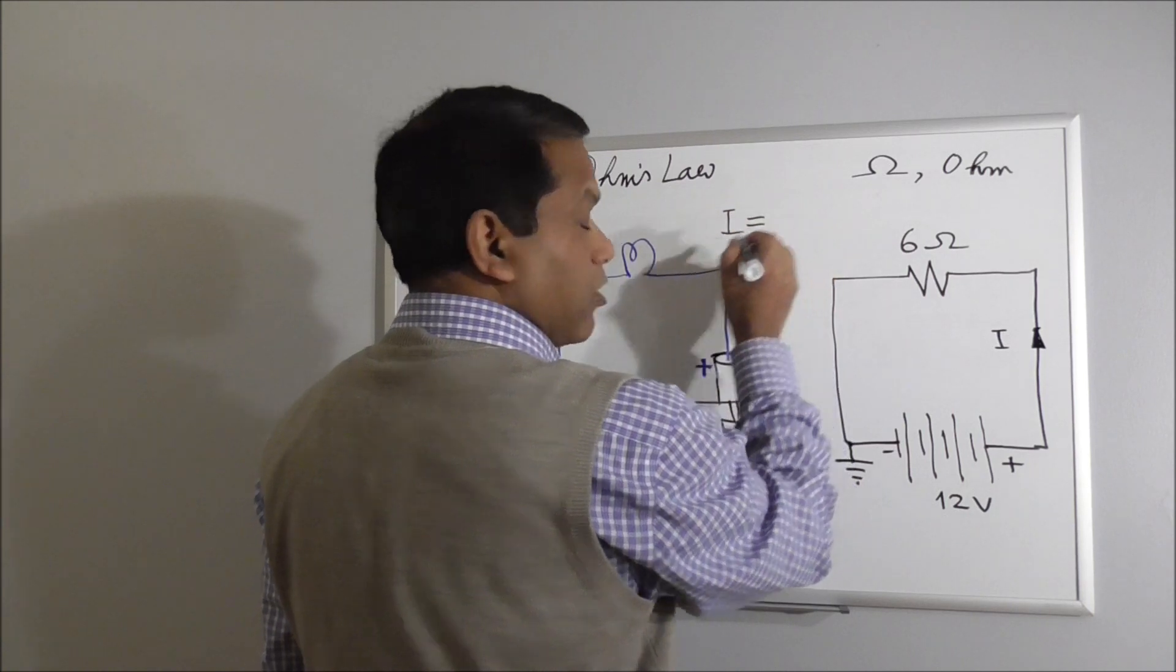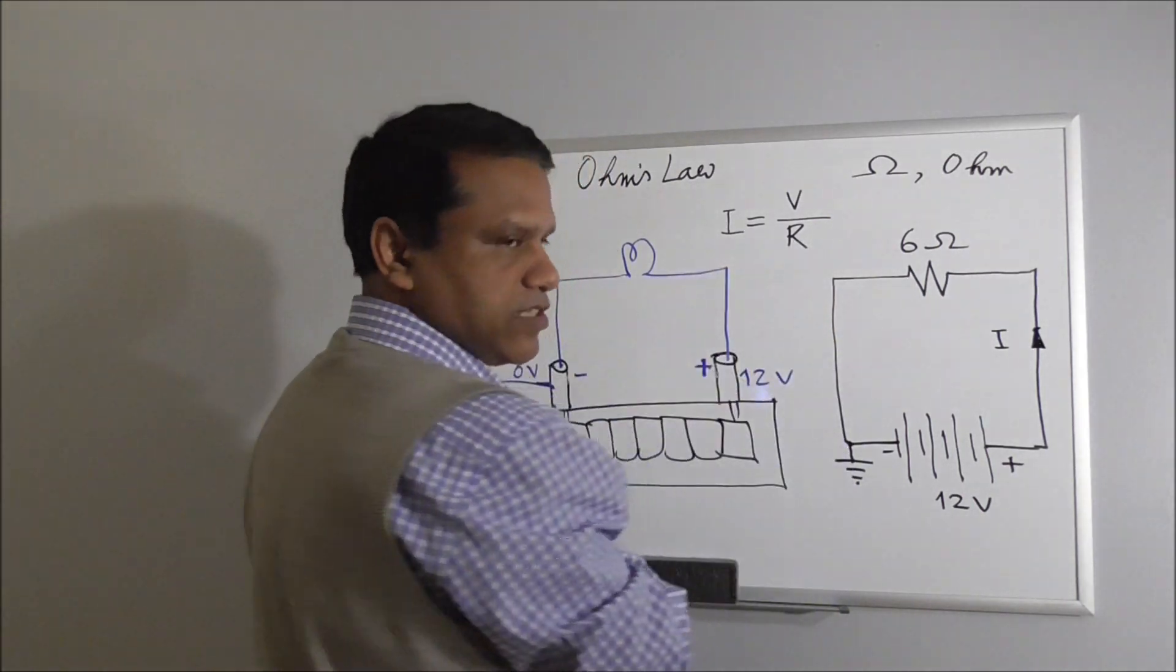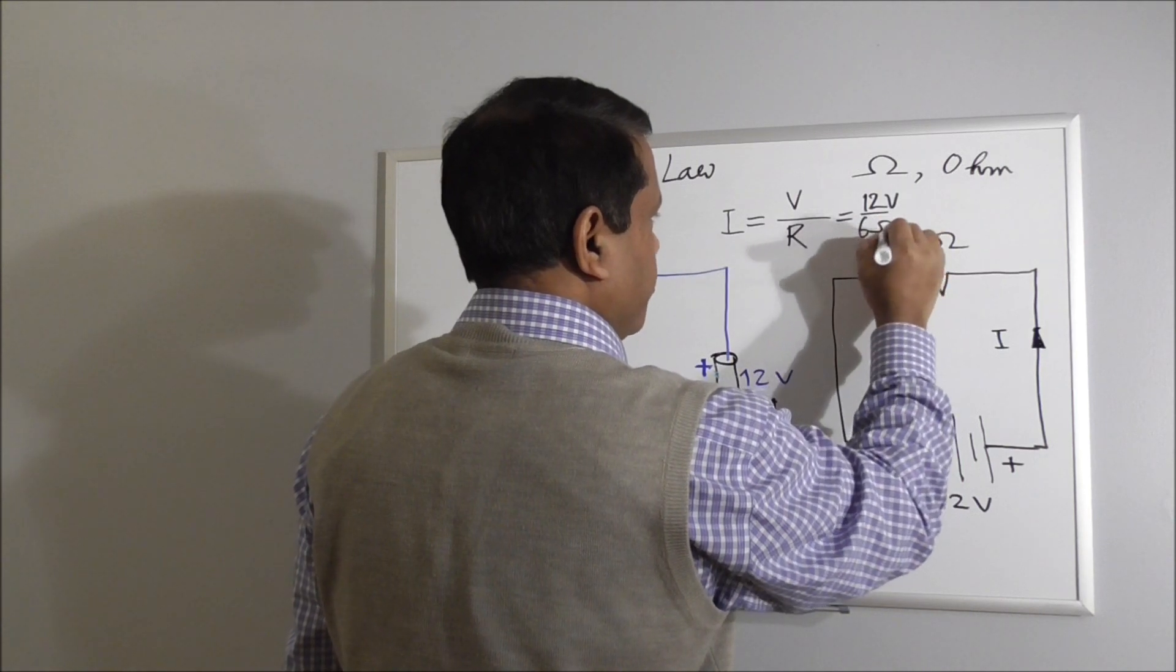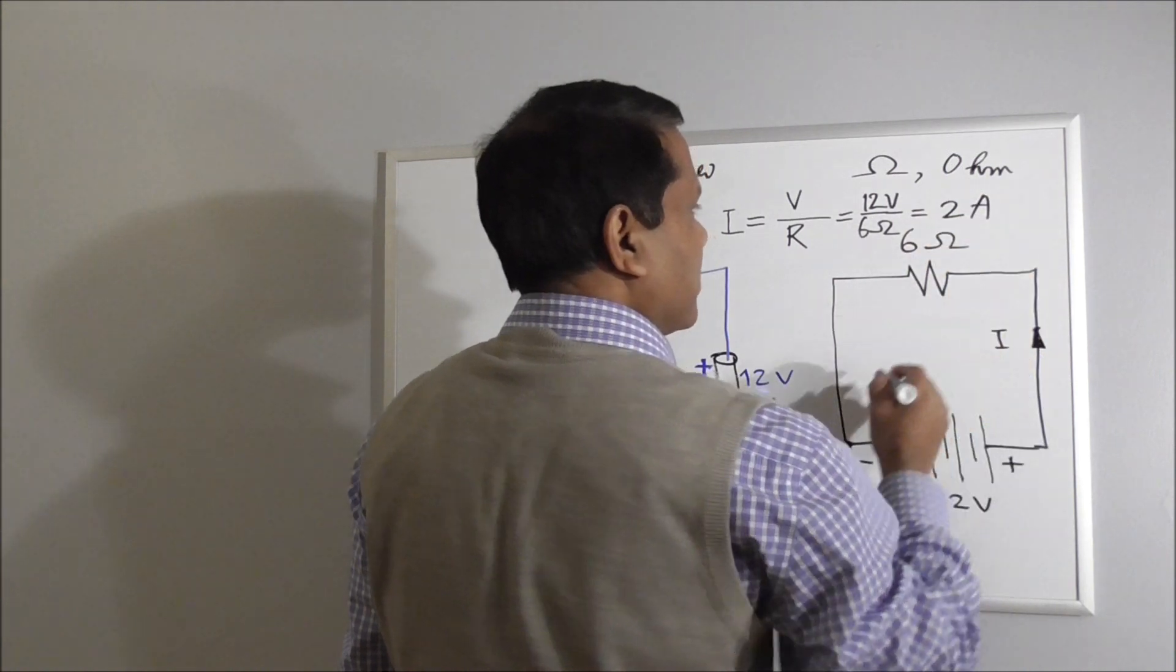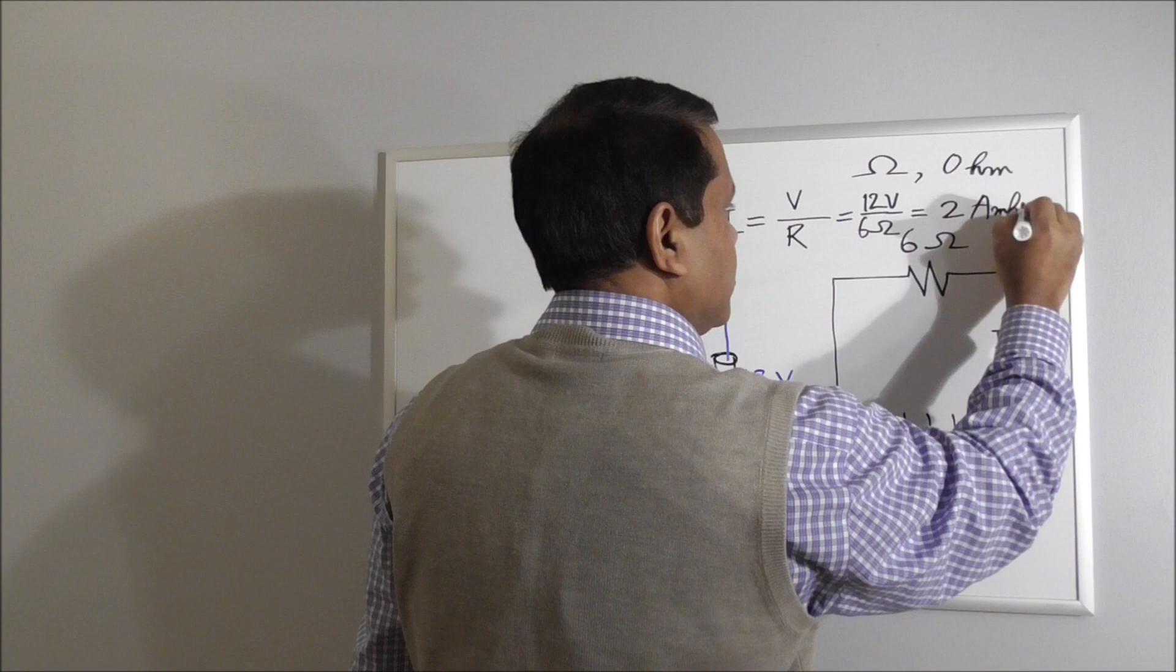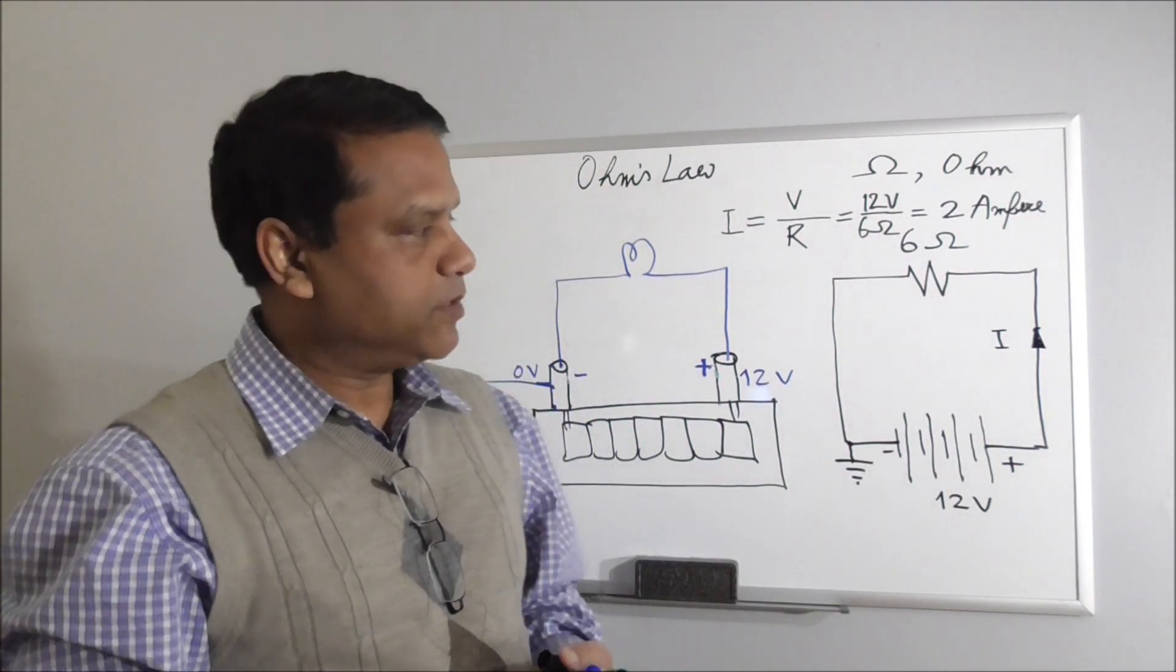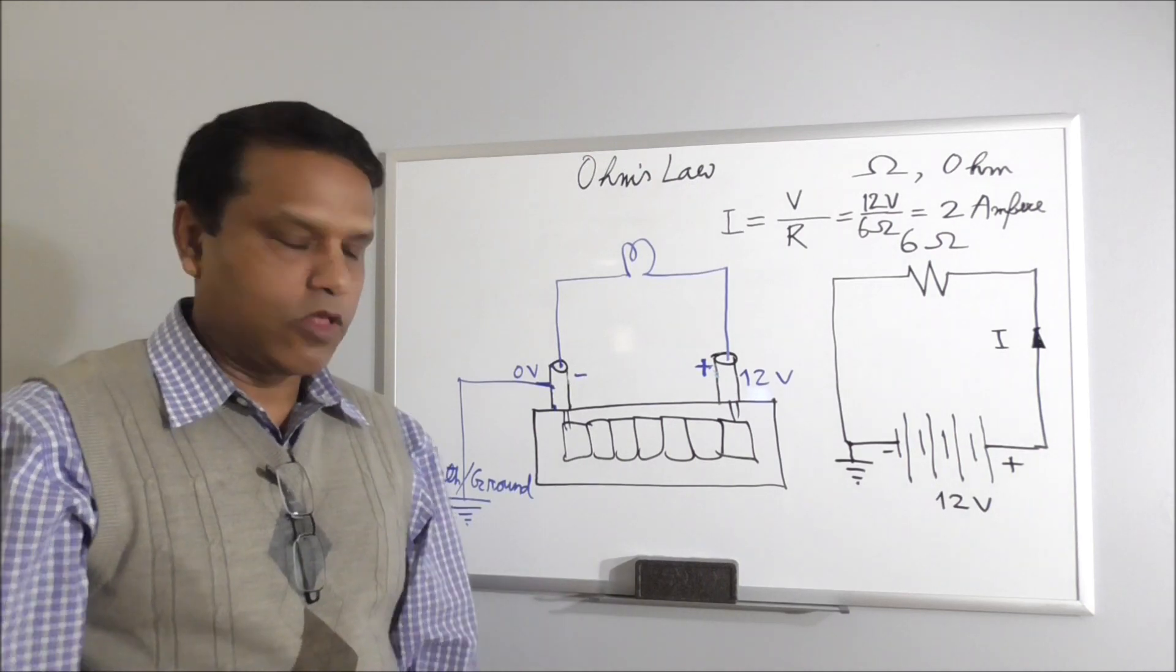If we mark the current as I, and the voltage is 12 volts, then I will be, according to Ohm's Law, V by R. R is the resistance. So V is 12 volts, R is 6 Ohms, so current will be 2 amperes. Let me write the full name so you know what that unit is - ampere. But in short we just write A, 2A. So I is 2 amperes. This is very simple. This is Ohm's Law.